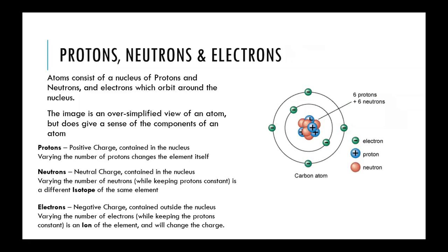Atoms themselves have three components within them: protons, neutrons, and electrons. The protons are found in the nucleus, or the center of the atom, and these have a positive charge associated with them. The number of protons is what dictates the element.